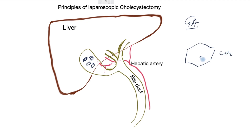Typically there will be a small slit just below the belly button that allows the surgeon to insert the camera inside the belly to see inside. Light is attached to the camera to allow placement of further ports — usually three: just below the breastbone, just below the ribcage on the right, and a third one more to the side.